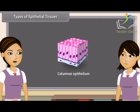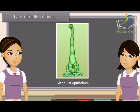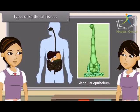Columnar epithelium consists of cells which are pillar-like in appearance because they are taller than broader. Their nuclei are at the base. It is found in the lining of stomach, small intestine, colon, gallbladder and oviducts, forming mucous membrane. The columnar epithelium is sometimes modified to form glands which secrete certain chemicals, and it is thus converted into glandular epithelium. It is found in the mucous membrane of stomach, sweat and oil glands.